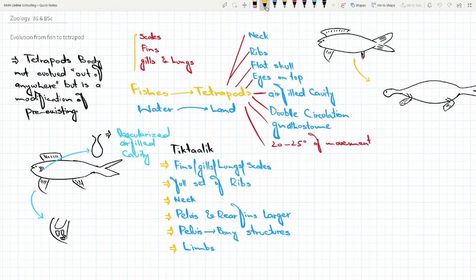The topic of the day is evolution from fish to tetrapods. How this miracle occurred that our life from the aquatic environment to the terrestrial environment. This one is the change, this one is the evolution, this one is the modification from fishes to the tetrapods.